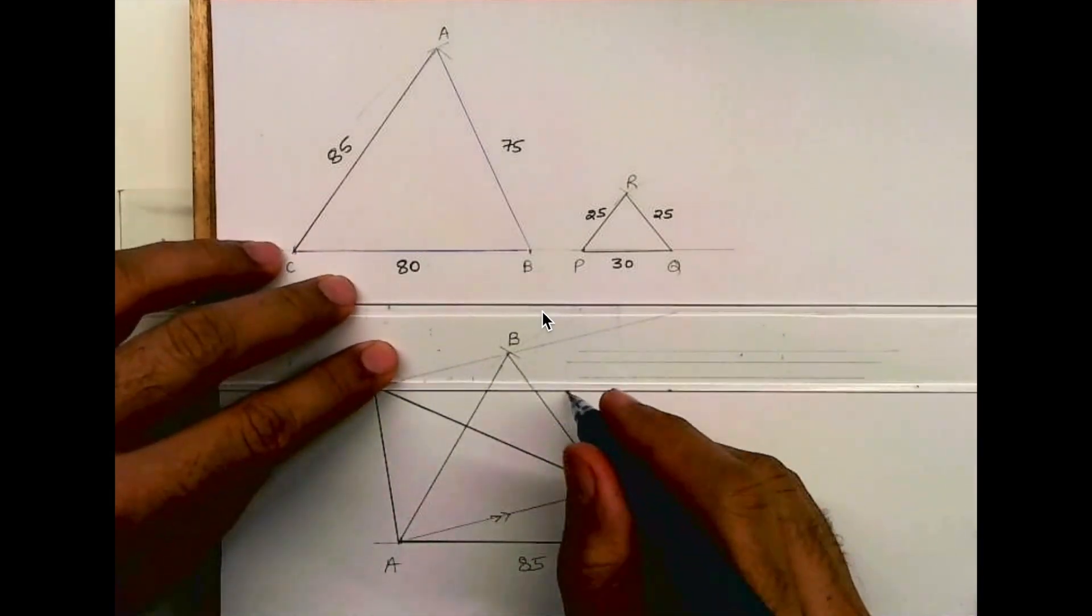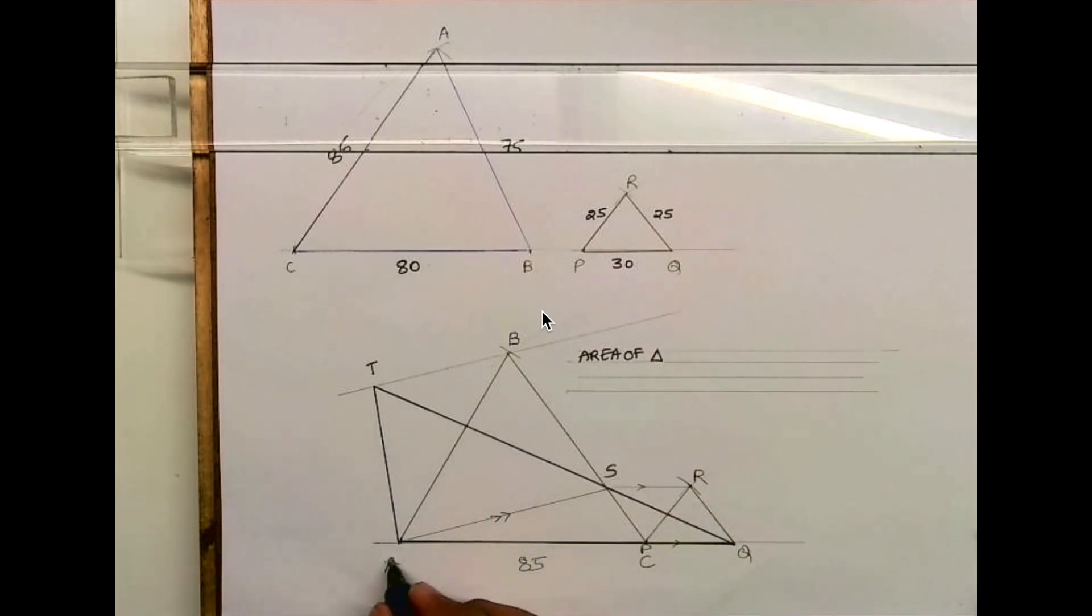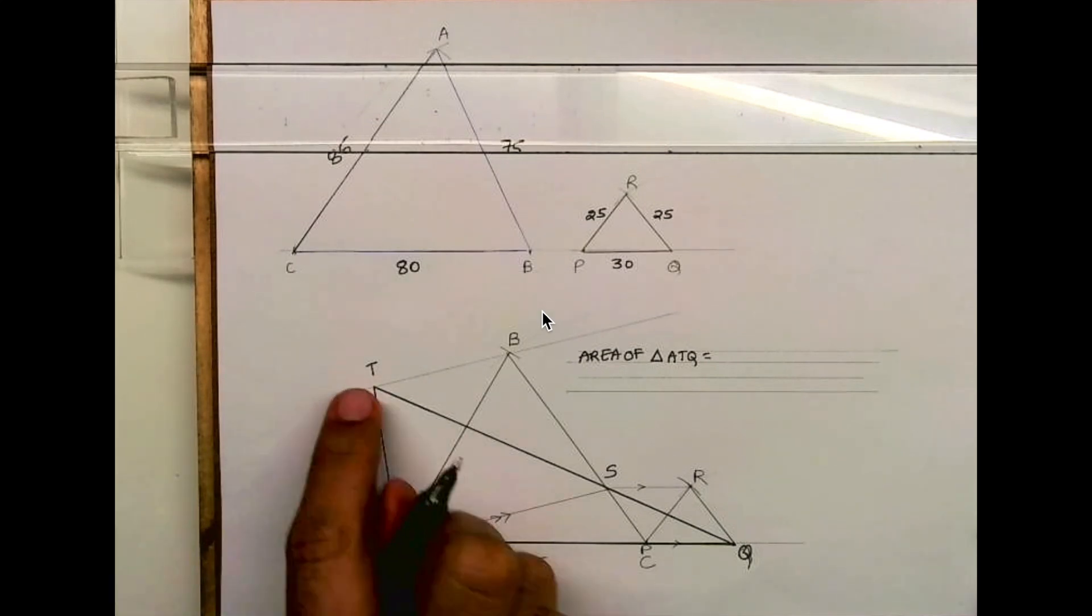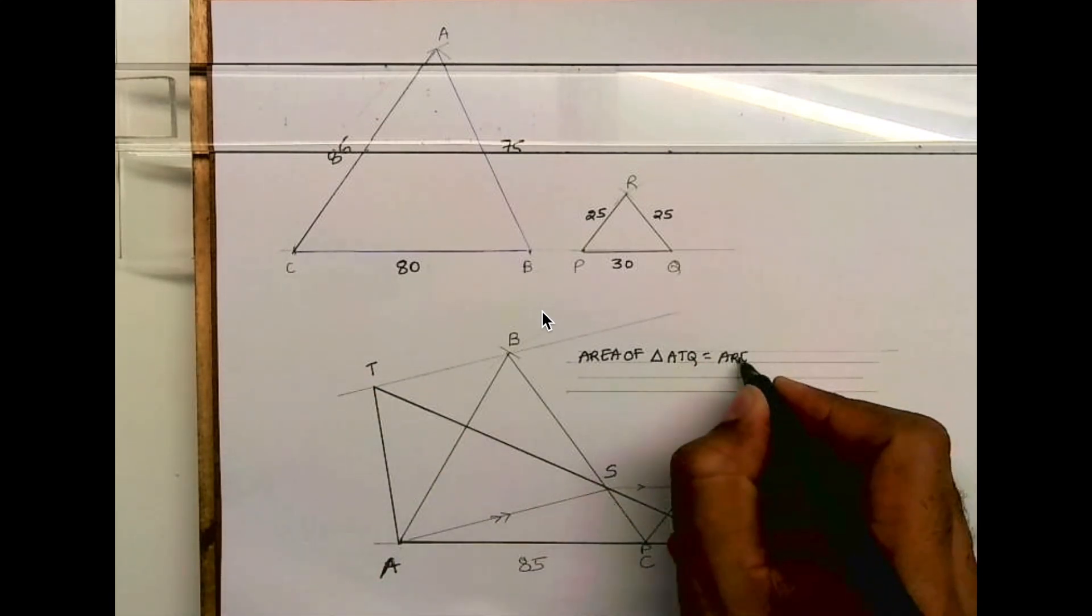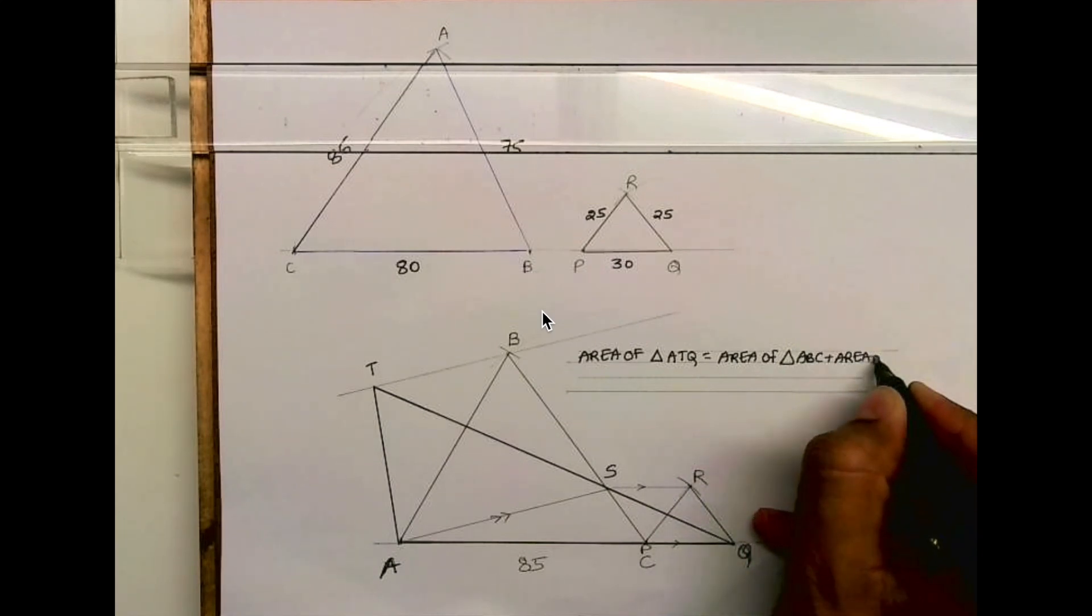We can write that the area of ATQ equals the area of ABC plus the area of PQR. I hope you have understood this. Thank you.